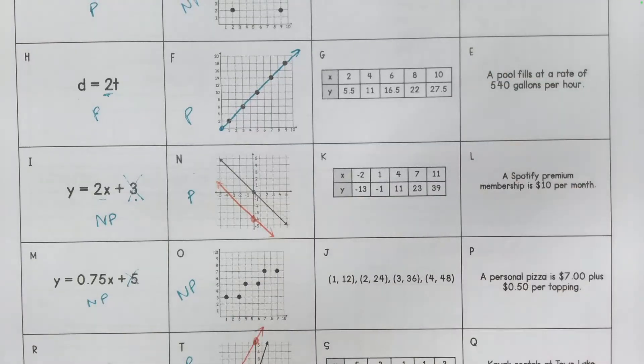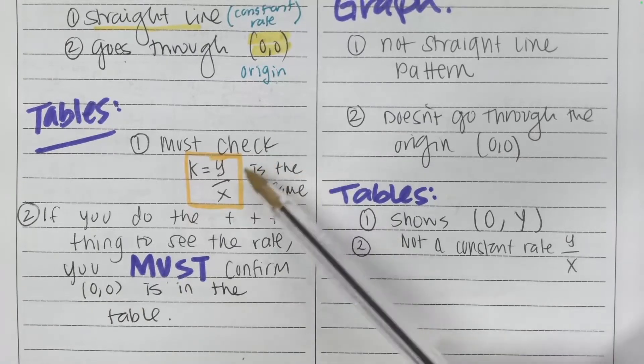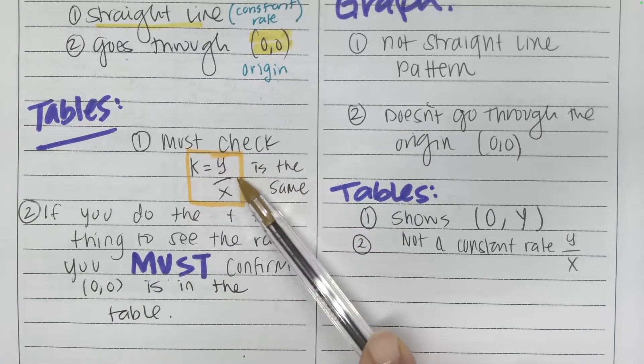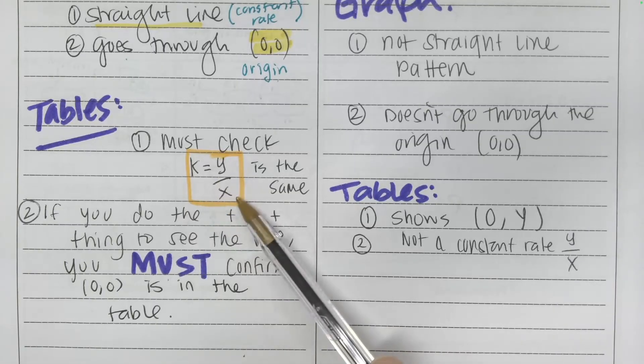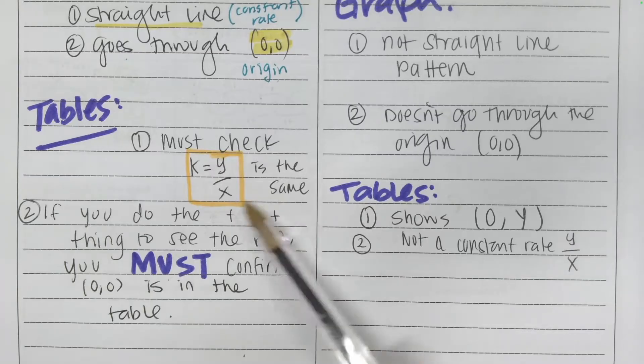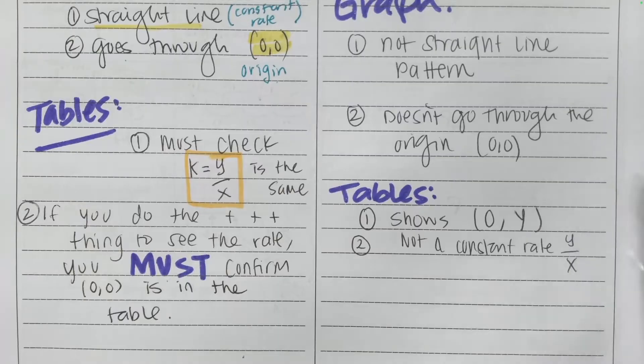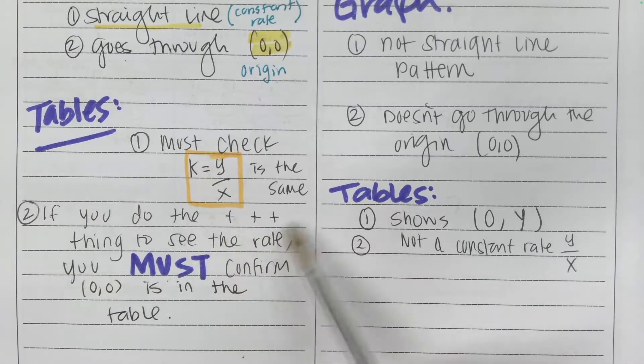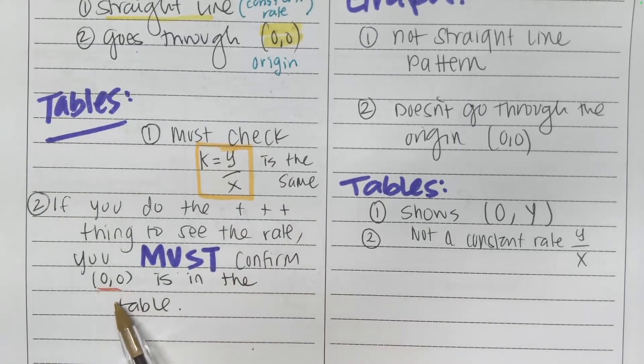How about when it's in a table or sets of ordered pairs? What do we do in that case? So there's a couple things that you want to check if it's in a table. One of the easiest ways to check if it's proportional is by using the constant of proportionality, y divided by x, for all of the points. So if they're all the same, boom, automatically you know it's proportional. But if you're somebody who's doing the plus, plus, plus thing, like you're trying to observe the pattern of how it's increasing or decreasing, you must confirm that 0, 0 is in the table.